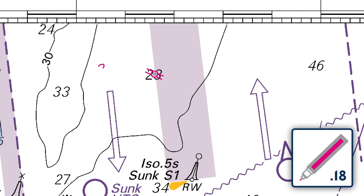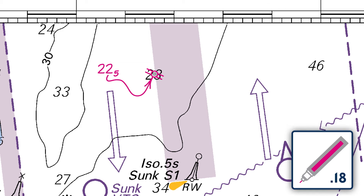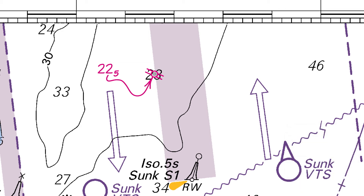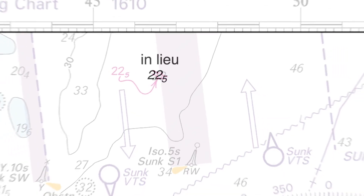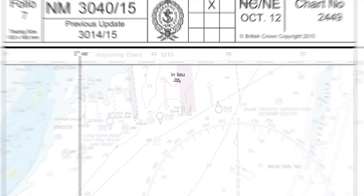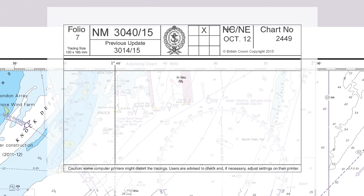Then write in the new depth and link with an arrow to the existing position. Now lay the tracing back over the chart to check that the correct depth has been replaced.